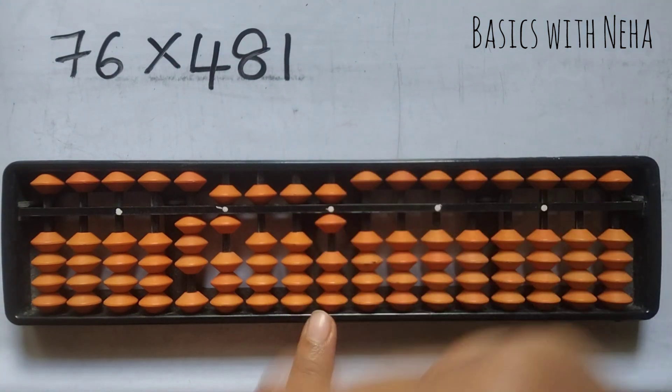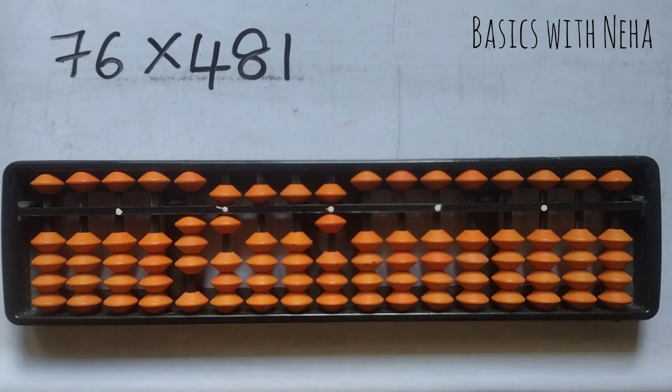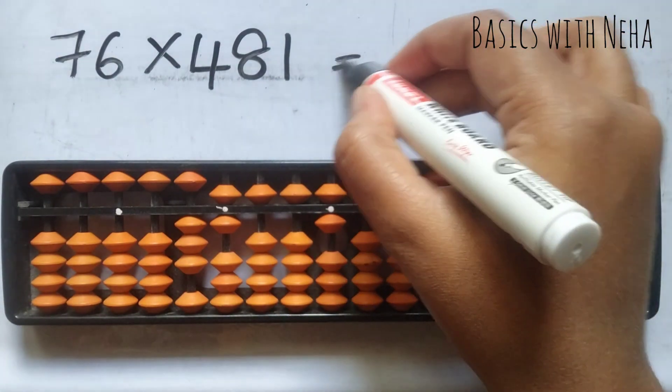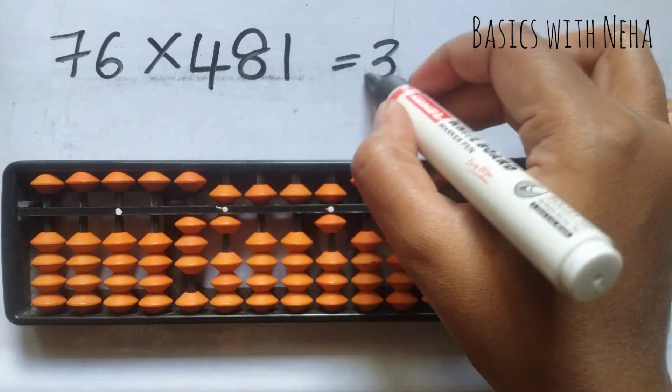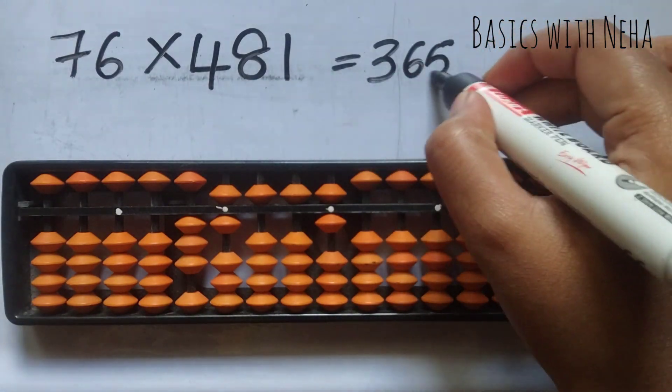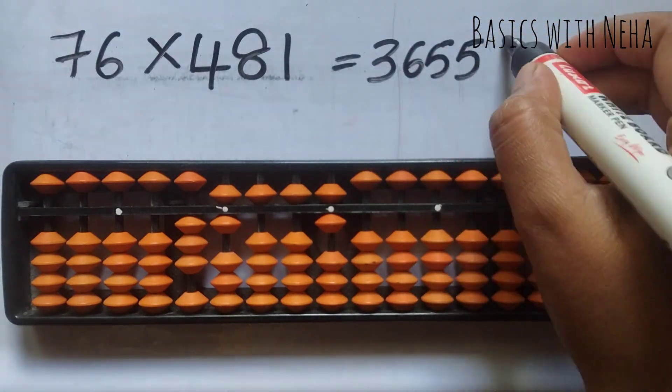6 ones are 6. So the answer to this question will be 36,556.